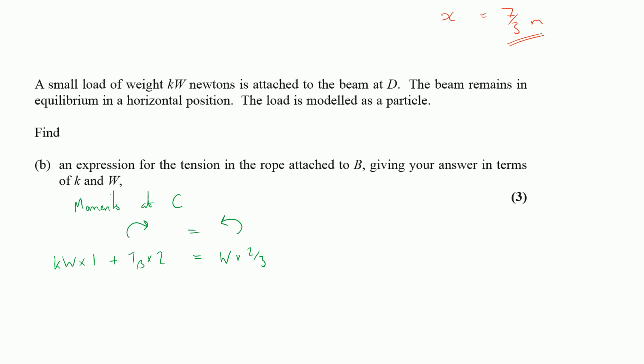So where do I get to now? Now I wanted to give the tension of B in terms of W and K, so I've got 2 lots of the tension at B is equal to 2 thirds of W minus KW. So the tension at B is going to be equal to, dividing this all through by 2, is 1 third of W minus K over 2 W. Now we might want to tidy that up, but essentially we're done at this point. We could say that the tension at B is equal to, factorising out W, 1 third minus K over 2, and I believe that the mark scheme for this question goes even one step further, and says that you could write this as W over 6 lots of 2 minus 3K.